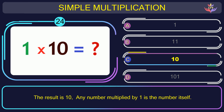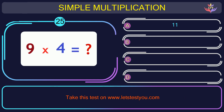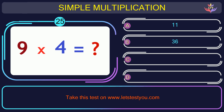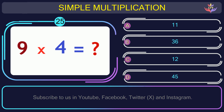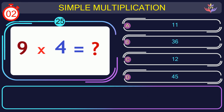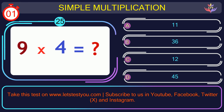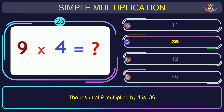Question number 25: could you guess the result when you multiply 9 and 4? The correct answer is option B.